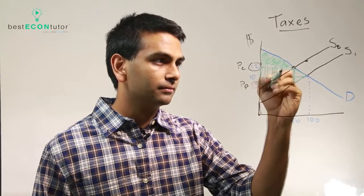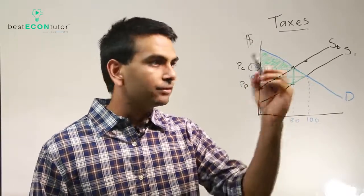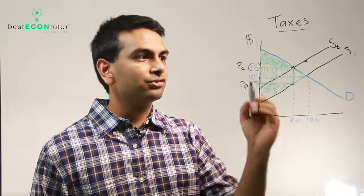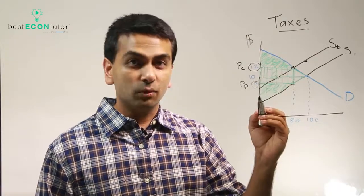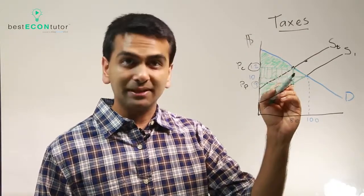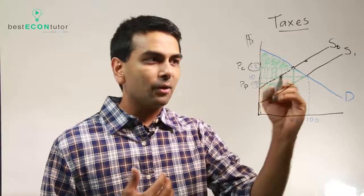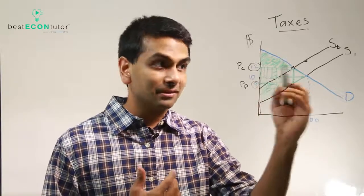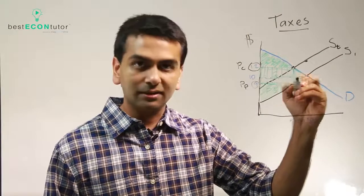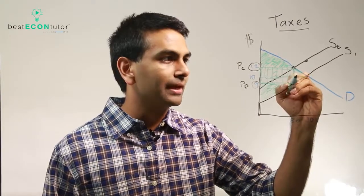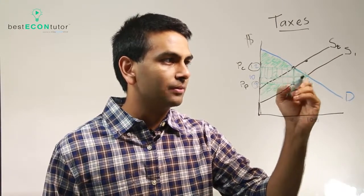When you take all that into account, if you look at how much is shaded compared to before, we still have a little bit less area. Even though the government gets money, it always gets less than how much CS and PS combined went down by. That's why there's still this area that we don't capture — and that's the deadweight loss. This triangle is the deadweight loss.